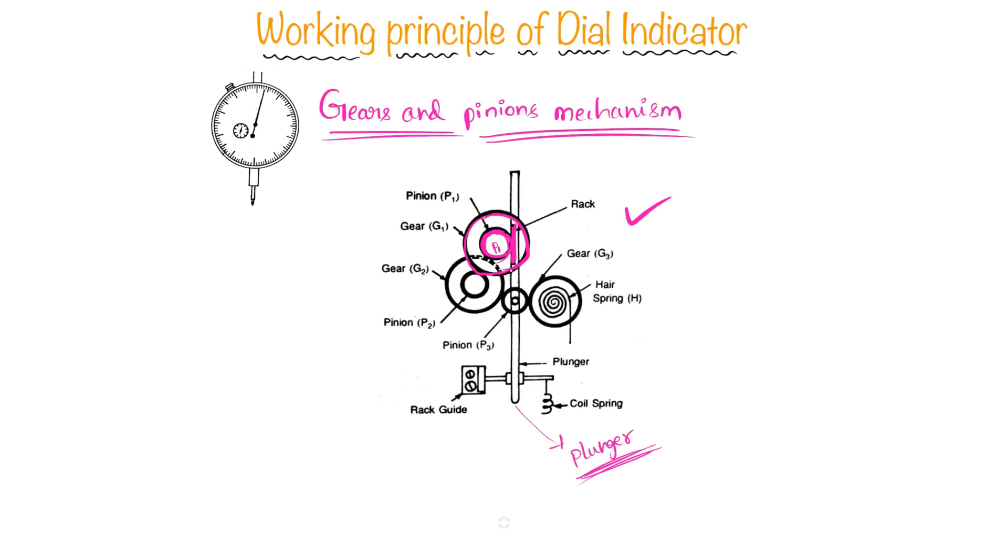This gear 1 meshes with this pinion 2, and this pinion 2 is mounted on this gear 2. Like this, the movement will be multiplied through this series of gears and pinions. And this pinion 3, which is connected to the needle or the indicator, will show the deflection on this dial.